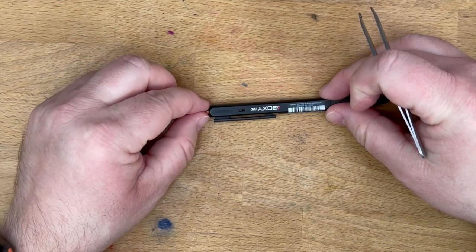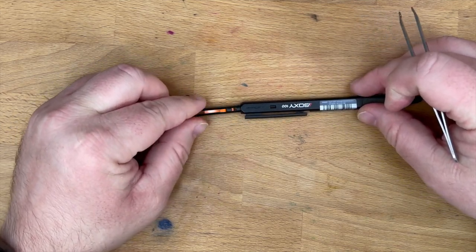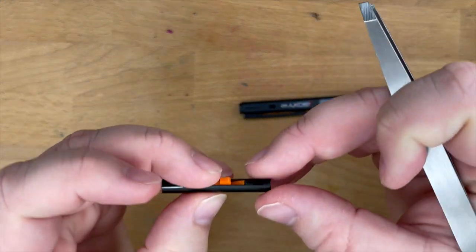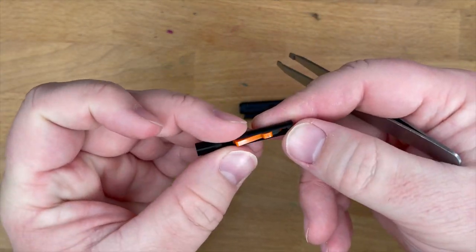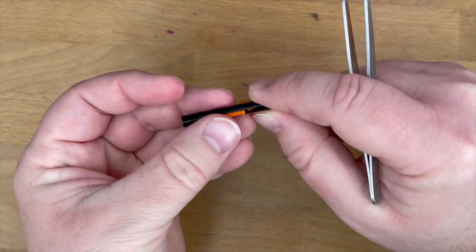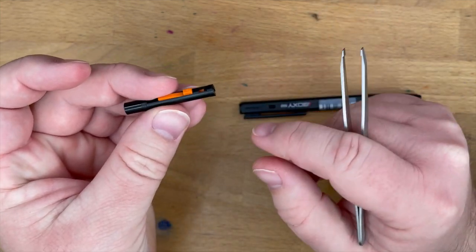Now this is spring-loaded right here, so don't just pull it out, because this little orange piece will fly away. Also, notice the orientation, or you won't be able to put it back in. There's this little plastic bar right here. There's not one on the other side, so make sure you have the bar side up, and then this is how it goes in.